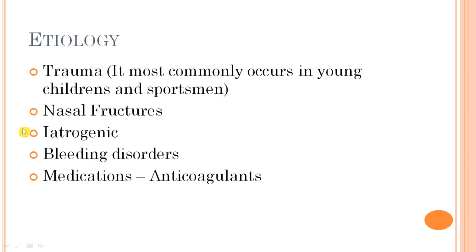If a fracture occurs in the septum, it may also lead to bleeding. If the perichondrial or periosteal membrane and the overlying mucous membrane do not rupture, blood accumulates between the septum and the membrane, forming a septal hematoma. However, if the mucous membrane is ruptured, bleeding exits the nose as epistaxis. So in nasal fractures, an intact mucous membrane leads to septal hematoma, while a ruptured one causes epistaxis.